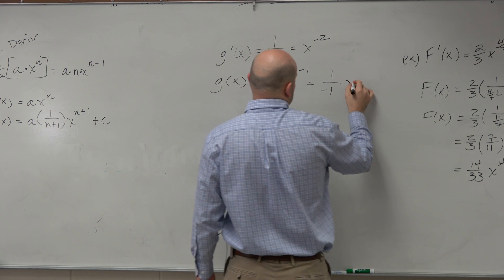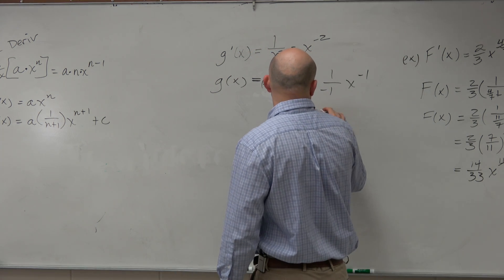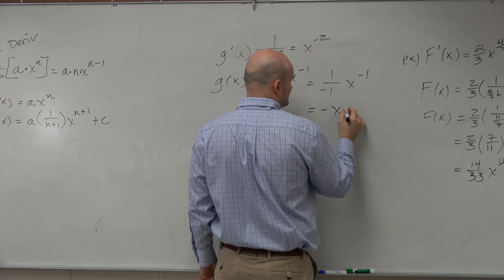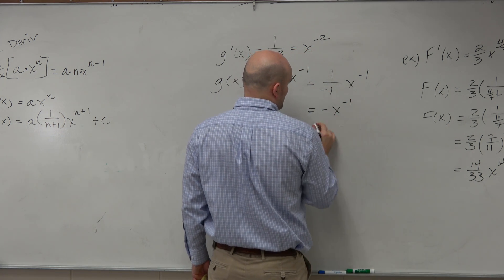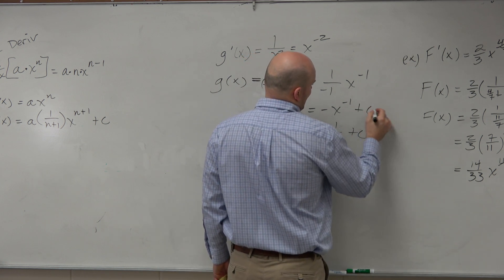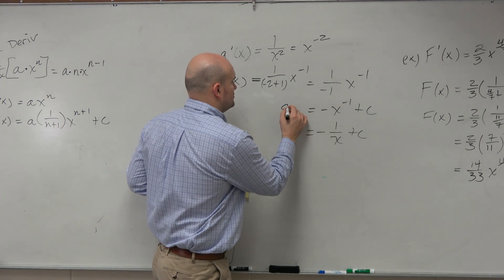1 over negative 1 times x to the negative 1, which we could really just simplify this guys as negative x to the negative first or negative 1 over x. And then just remember to add the c at the end. So that would be our g of x.